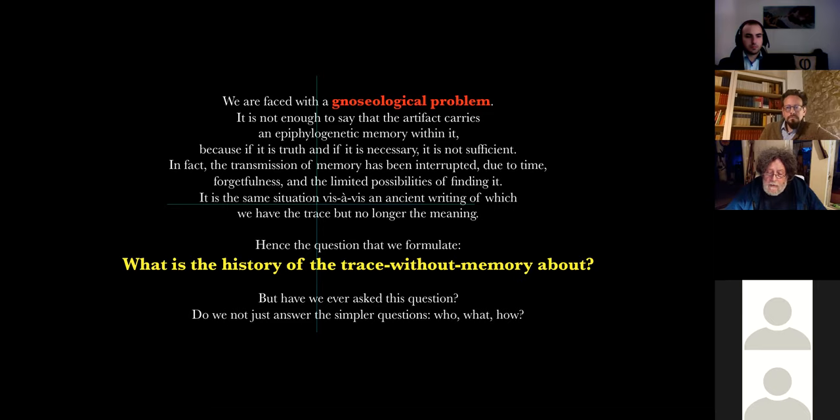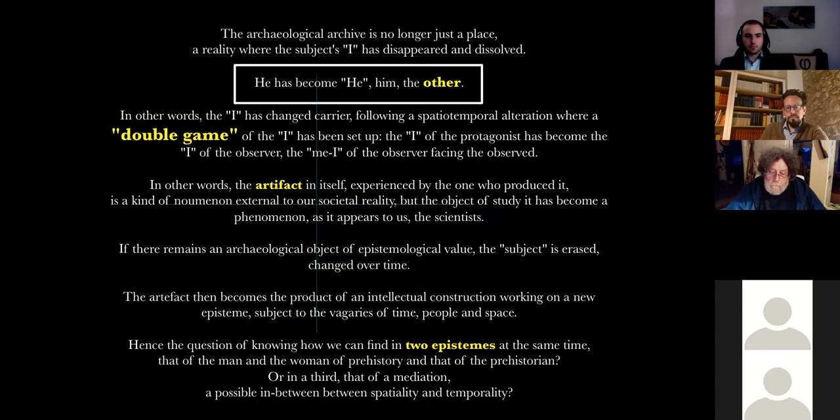Et pourtant, l'artefact a persisté à travers le temps et se trouve au présent réobservé dans un présent qui n'est plus le sien, mais qui se présente dans l'espace temporel d'une analyse. Nous sommes confrontés à un problème d'ordre gnoséologique. Il ne suffit pas de dire que l'artefact porte en lui une mémoire épiphylogénétique, parce que c'est une vérité, et si elle est nécessaire, elle n'est pas suffisante. En fait, la transmission de la mémoire a été interrompue, faute au temps, à l'oubli, à la possibilité restreinte de la retrouver. C'est la même situation vis-à-vis d'une écriture antique dont nous possédons la trace mais plus le sens. D'où la question du 'de quoi' que nous formulons ainsi: de quoi l'histoire d'une trace sans mémoire est-elle l'histoire? Le 'je' a changé de porteur suite à une altération spatio-temporelle où s'est mis en place un double 'je'.